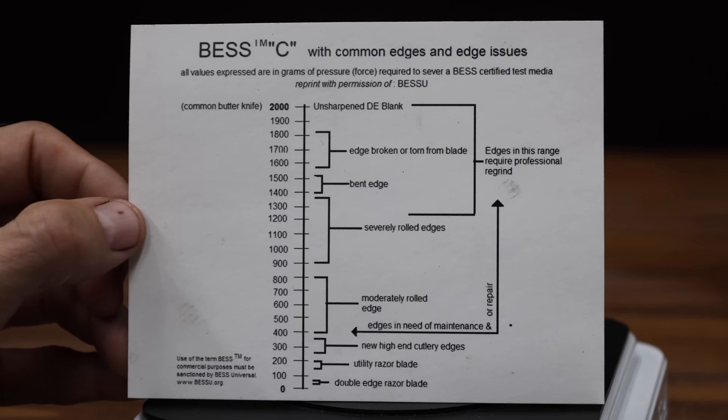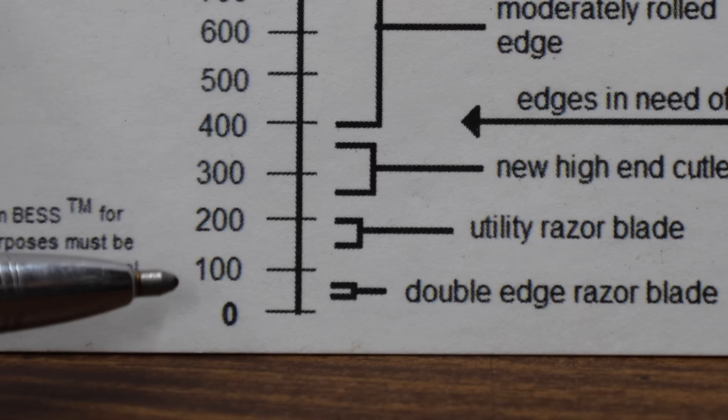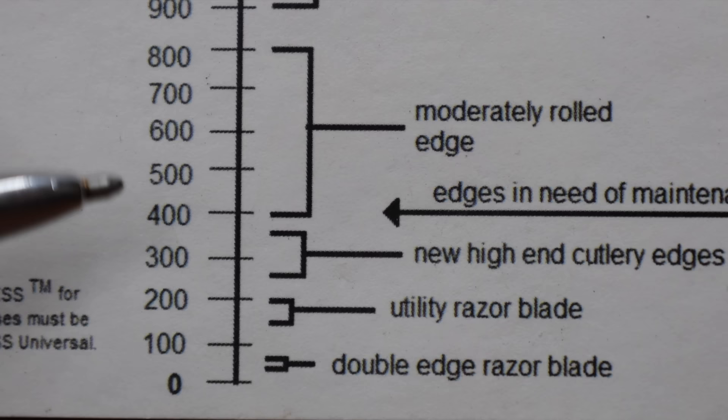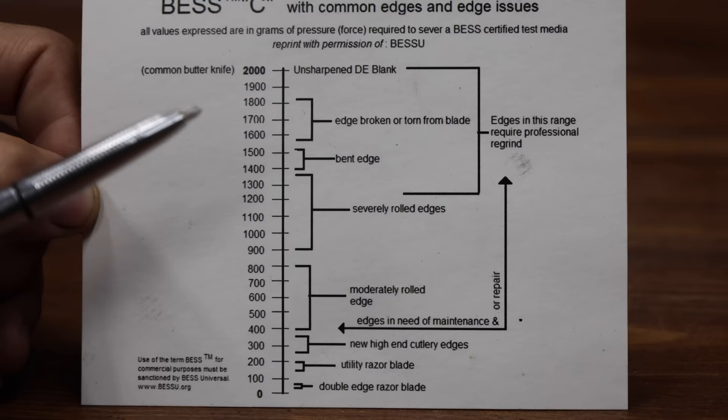The sharpness chart came with the sharpness tester. A double-edged razor blade is around 50, and a utility blade is anywhere from 150 to 200. A new high-end cutlery edge is anywhere from 250 to 350. Edges that need maintenance are around 400. A butter knife is around 2,000.